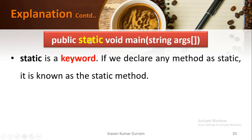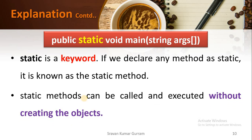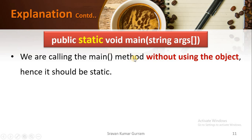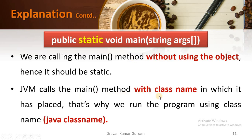Why do we write static? Static is a keyword in Java. If we declare any method as static, it is known as a static method. The property of a static method is that it can be called and executed without creating objects. JVM calls the main method with just the class name — that is why when we run the program, we use the syntax: java ClassName.